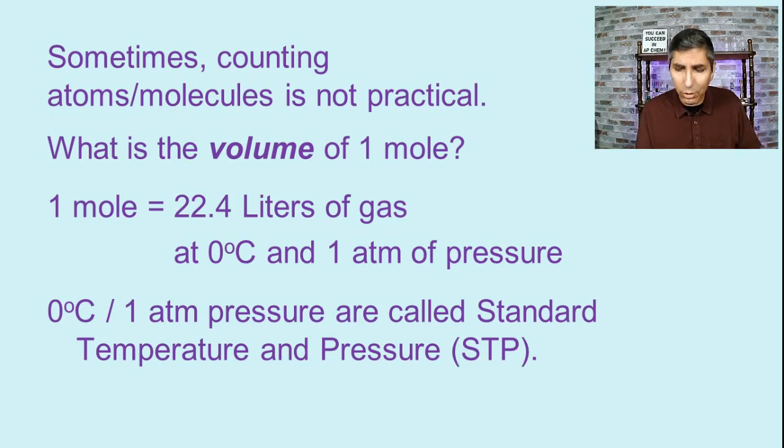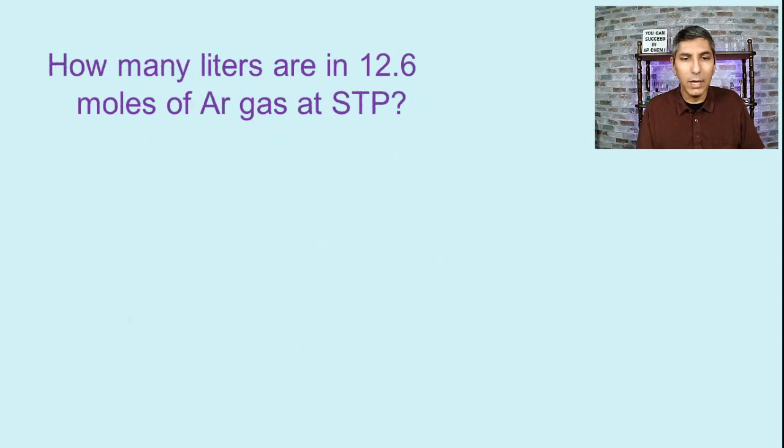Let's try a couple of examples with this. How many liters are in 12.6 moles of argon gas at STP? Just like in any typical conversion problem, we're going to start by writing down what's given to us, the 12.6 moles. Since we're converting to liters, I'm going to put liters at the end. In my conversion factor, I'm going to put moles on the bottom to cancel. Since I'm converting to liters, I need liters on the top.